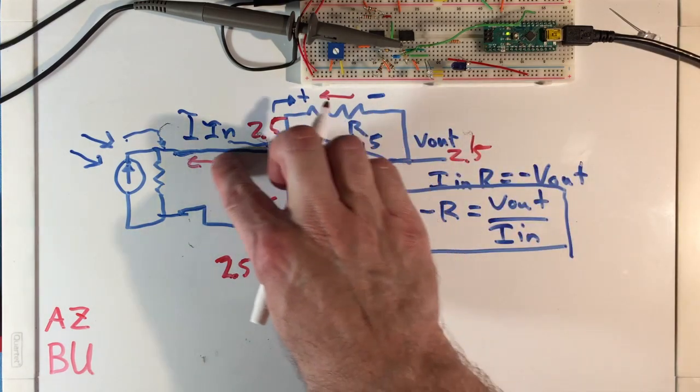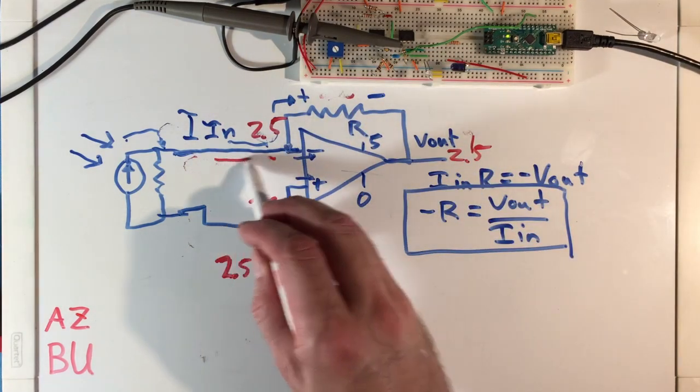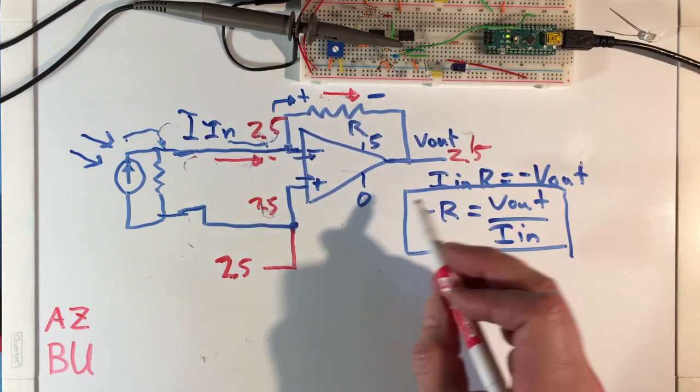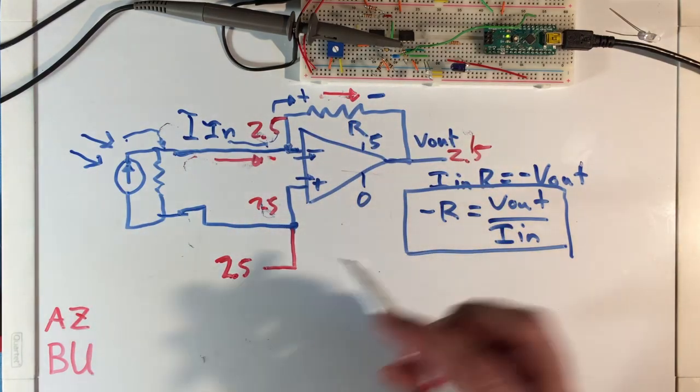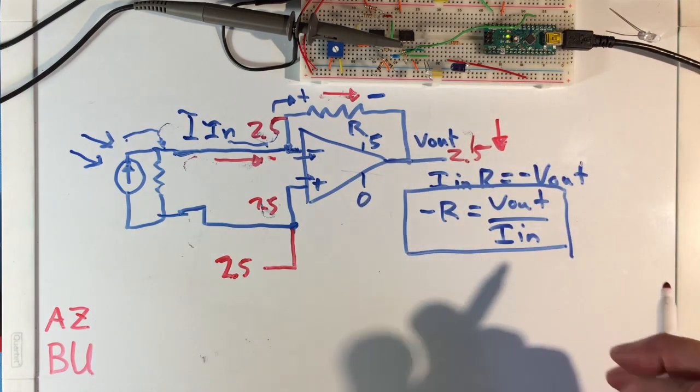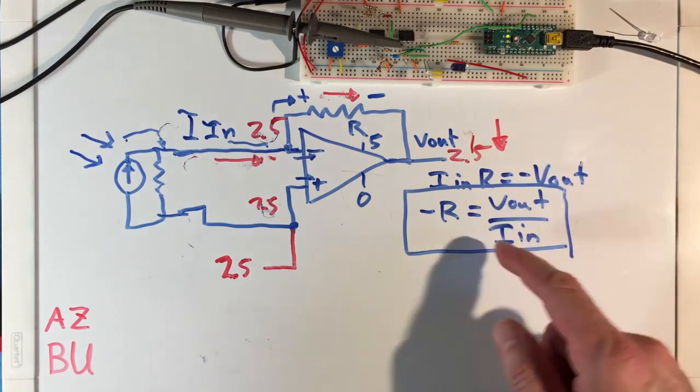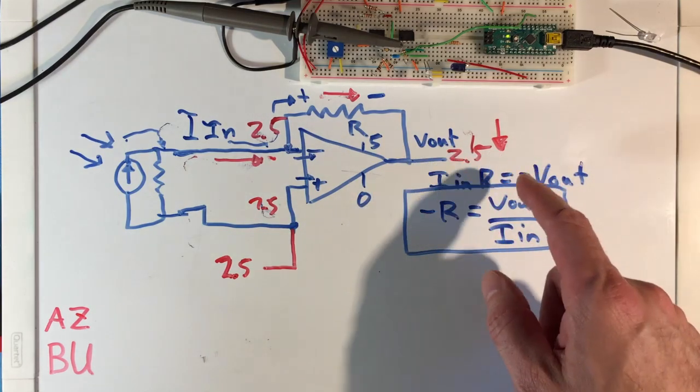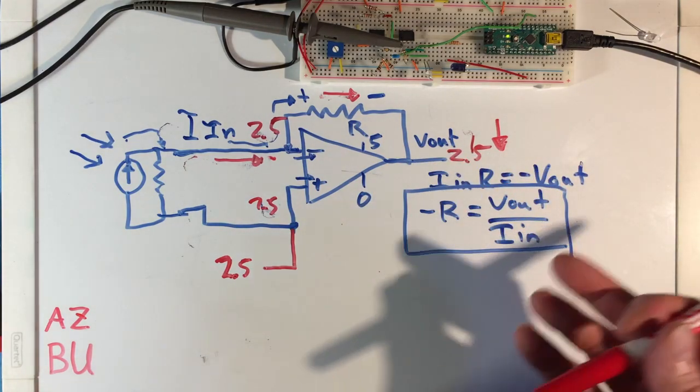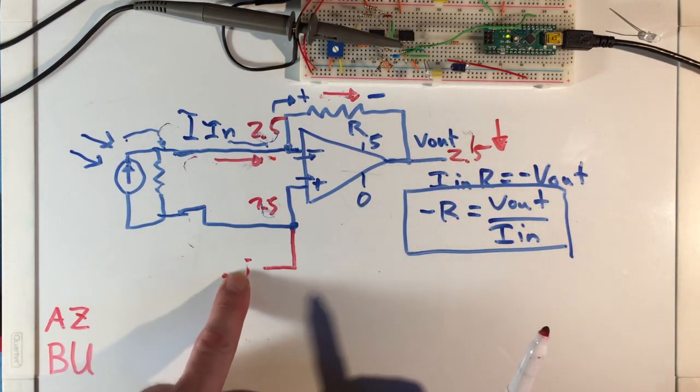So now if our current was flowing in the positive direction into the amplifier, when the current here increases, the voltage on the output is going to decrease below 2.5 volts. How we could handle this is if we're going into something like a microcontroller, we'd call 2.5 volts zero, and then we would literally subtract 2.5 volts off of the measured output.